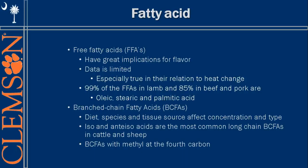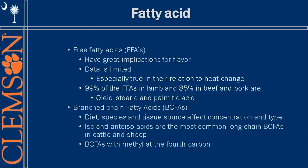We're actually looking into palmitic acid right now and seeing what effects it has on the feed in the ovine species. The branch chain fatty acids are really affected by diet, species, tissue source — meaning muscle or fat source — as well as concentration and type. The iso and anteiso acids are the most common in cattle and sheep, and the BCFAs with methyls at the fourth carbon seem to have the most off flavors.